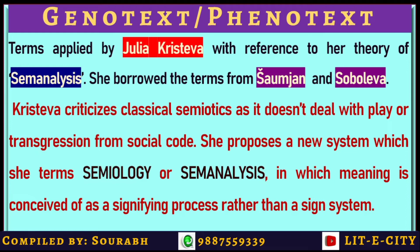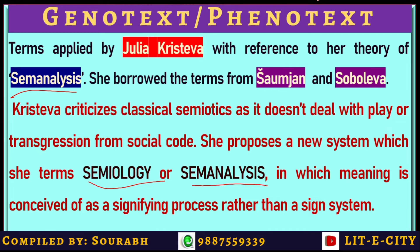Our next term is Genotext and Phenotext. These are terms applied by Julia Kristeva, the famous Belgian critic, with reference to her theory of semanalysis. She borrowed these terms from Somjan and Soboleva, two critics who first discussed the two varieties of a text — Genotext and Phenotext. Kristeva criticizes classical semiotics proposed by Peirce and Saussure because she finds that it doesn't deal with play, transgression, or multiple meaning from social code. That is why she proposes a new system, which she calls semiology or semi-analysis, in which meaning is conceived not as a sign system but as a signifying process.